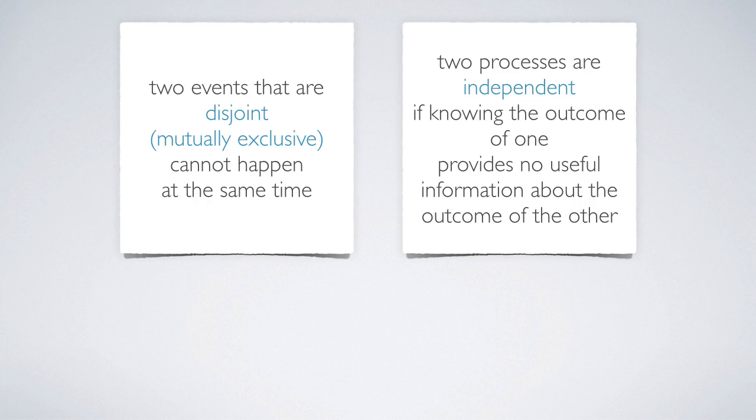So disjointness is about events happening at the same time. If events A and B are disjoint, probability of A and B is zero. While independence is about processes not affecting each other. So if events A and B are independent, probability of A given B is equal to simply probability of A.